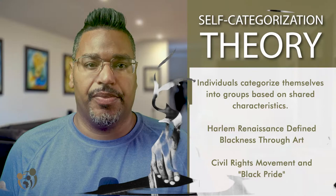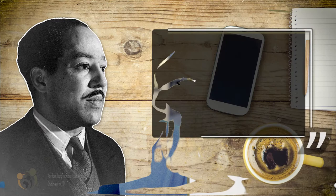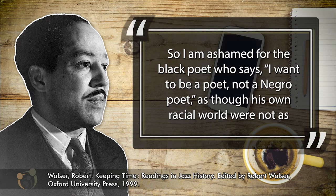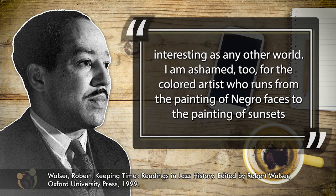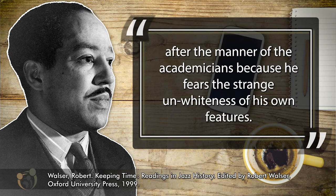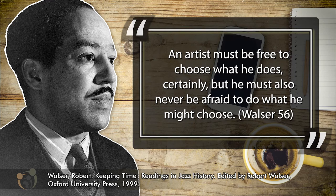One of the major figures asserting this new identity was Langston Hughes. Born in Joplin, Missouri in 1902, he moved to New York City in 1918. In his essay, "The Negro Artist and the Racial Mountain," he boldly proclaimed: "So I am ashamed for the Black poet who says, I want to be a poet, not a Negro poet, as though his own racial world were not as interesting as any other world. I am ashamed, too, for the colored artist who runs from the painting of Negro faces to the painting of sunsets after the manner of the academicians because he fears the strange unwhiteness of his own features. An artist must be free to choose what he does, certainly. But he must never be afraid to do what he might choose."